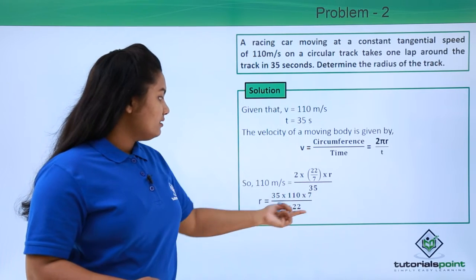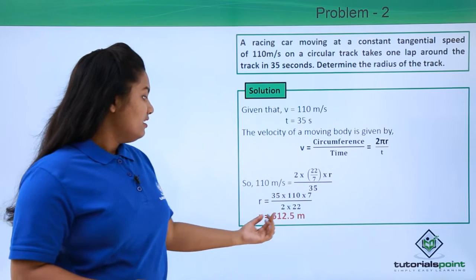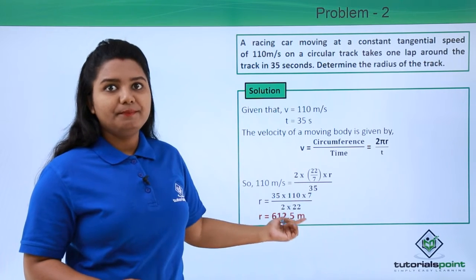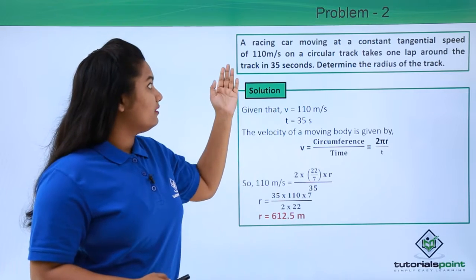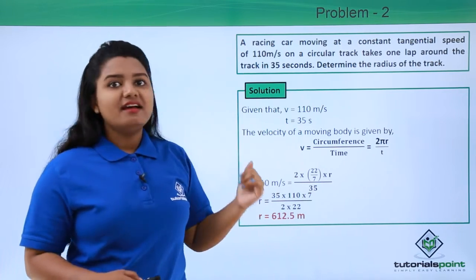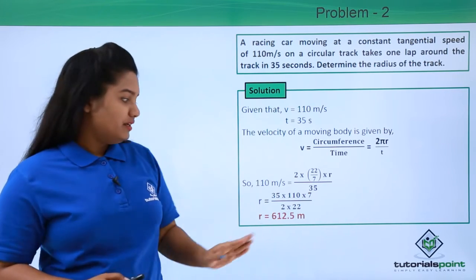And on evaluating this whole expression we get the answer to be radius equals 612.5 meters. So the radius of the circular track in which the racing car was moving is found out to be 612.5 meters.